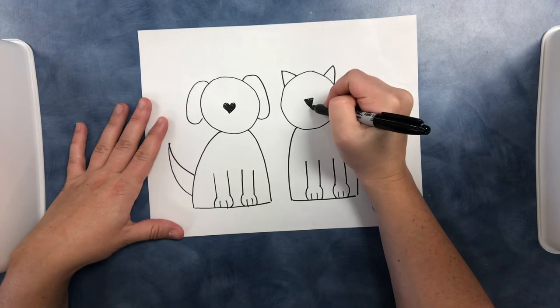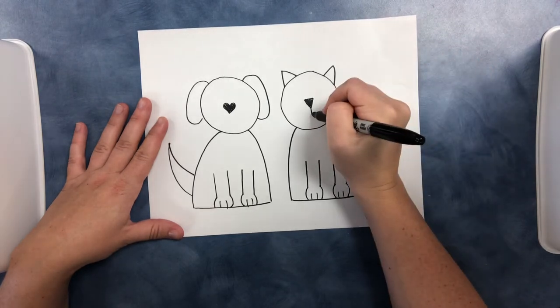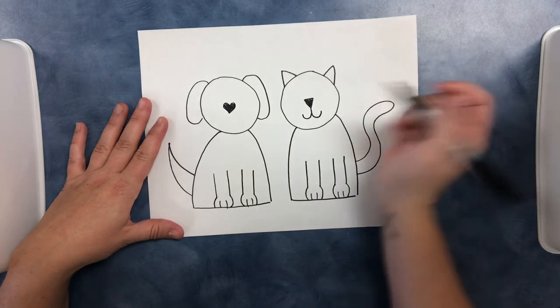And then we're going to do the mouth. It's going to be like the letter J on one side and it's going to hook the other way on the other side.